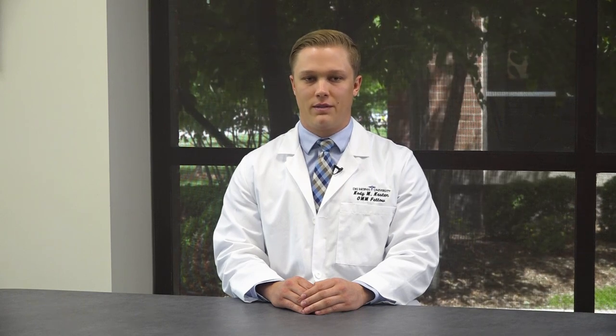Effective treatment of posterior rib somatic dysfunction with HVLA thrust can reduce pain, improve shoulder posture and scapulothoracic mechanics, balance the autonomic nervous system, improve venous and lymphatic return, and restore health.